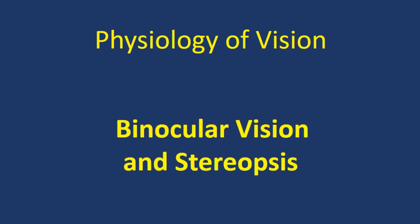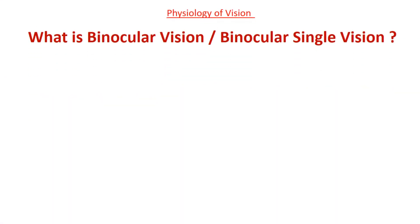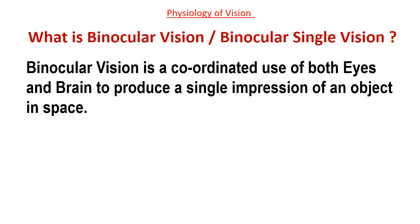Then binocular vision and stereopsis. What is binocular vision, or sometimes called binocular single vision? Whenever both eyes look at an object, two different images are formed on the retina, one in each eye. But in normal eye condition, we do not see two objects — we see only one. This is because our eyes and brain together have the ability to work together and produce a single image of the object. This is binocular vision — in other words, it is the coordinated use of both eyes and brain to produce a single impression of an object in space.